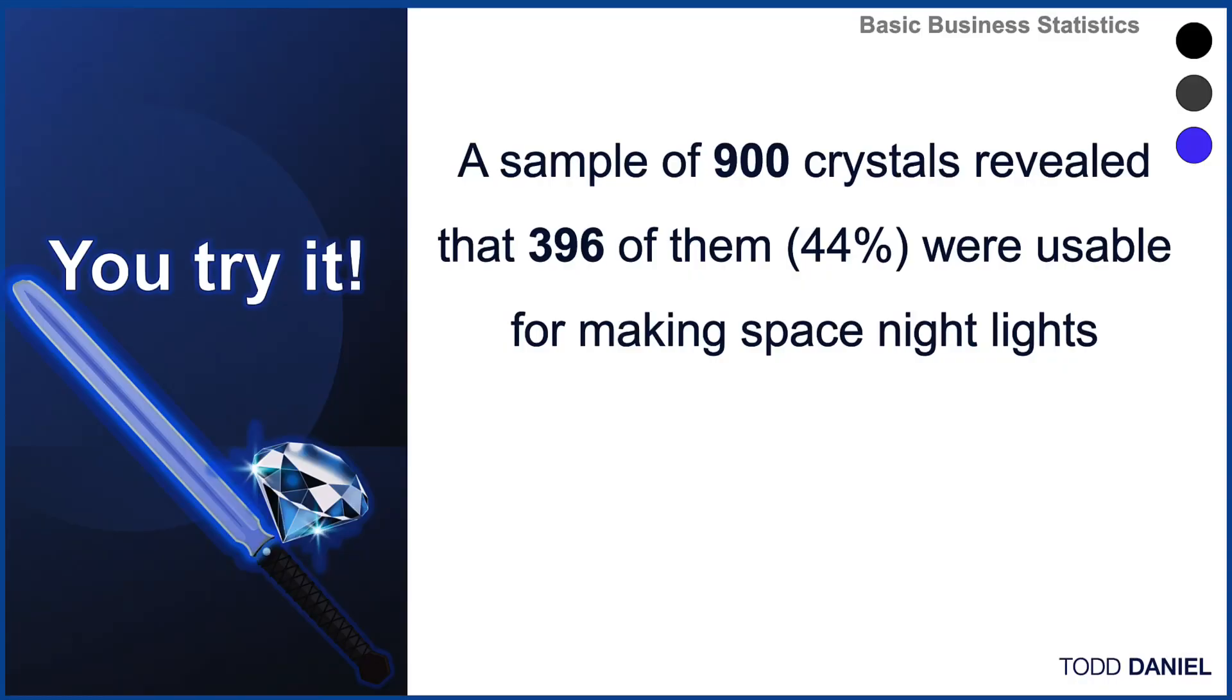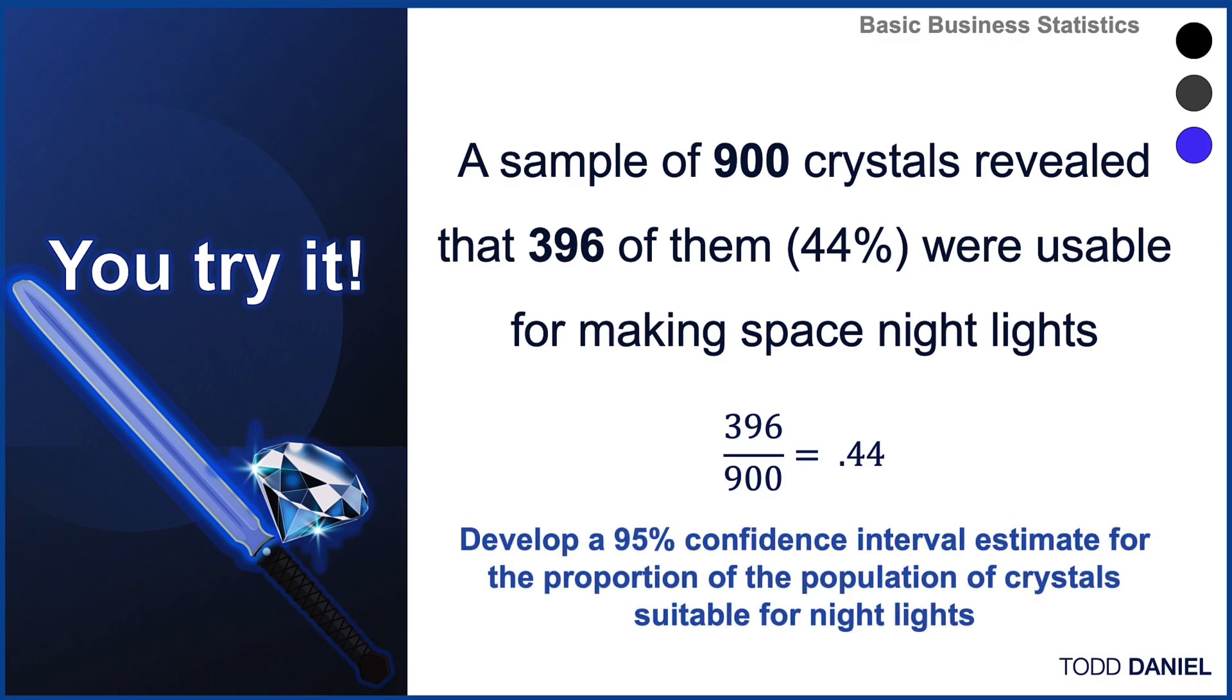A sample of 900 crystals revealed that 396 of them, or 44%, were usable for making space nightlights. Note that the 44% comes from dividing 396 by the total of 900. Develop a 95% confidence interval for an estimate of the proportion of the population of crystals suitable for nightlights.